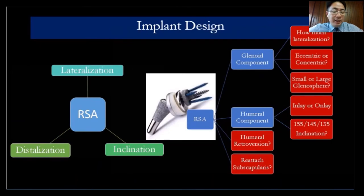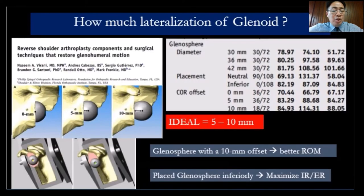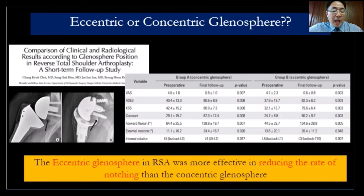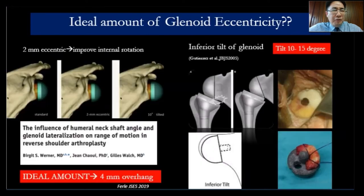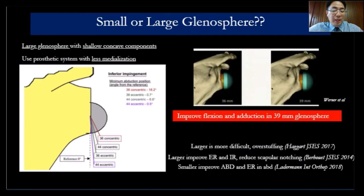For implant design, you need to know your implant's glenoid and humeral components. Regarding glenoid lateralization, I prefer to lateralize about 5 to 10 millimeters, using an eccentric placement with inferior overhang of about 2 to 4 millimeters and inferior tilt of about 10 to 15 degrees. For the glenosphere size, I prefer the appropriate size rather than the biggest — using too large a size causes overstuffing and makes exposure more difficult.